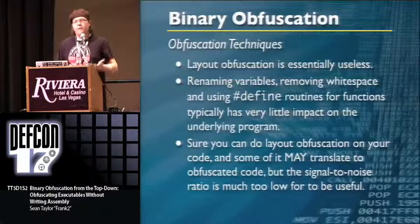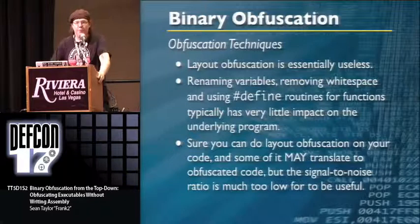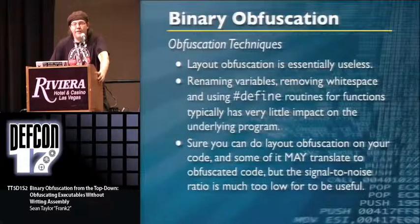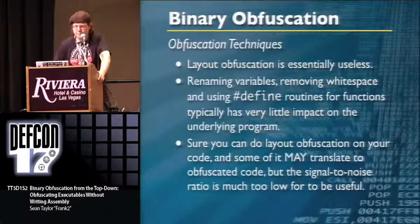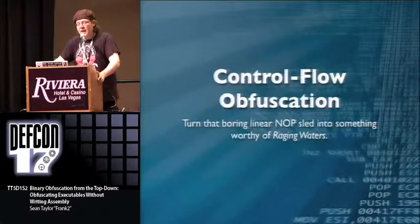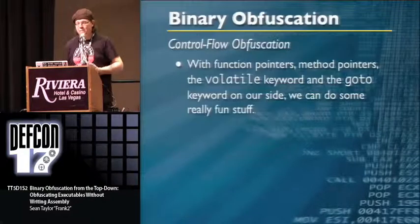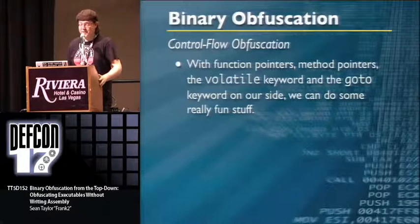For interpreted languages like JavaScript or Python, layout obfuscation is basically the only option since it's typically not compiled. But with this in mind, there's a lot of meat in control flow obfuscation. If we have function pointers, method pointers, the volatile keyword, and yes — even the goto keyword — we can do a whole lot of really fun stuff.